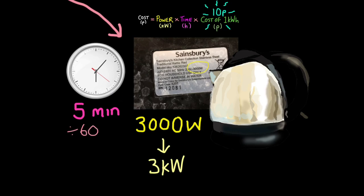So we have to divide 5 by 60 to work out the time in hours. So here we have 3 kilowatts times by 0.08 hours, that's what you get if you perform this operation, times by 10p. And that will give you an answer of 2.4p, which doesn't sound like a lot, but remember you've only been using it for 5 minutes.